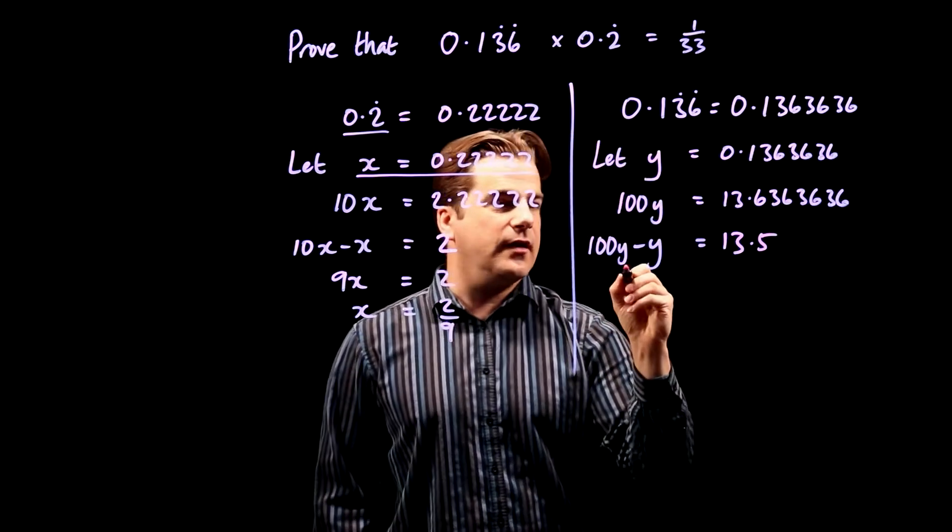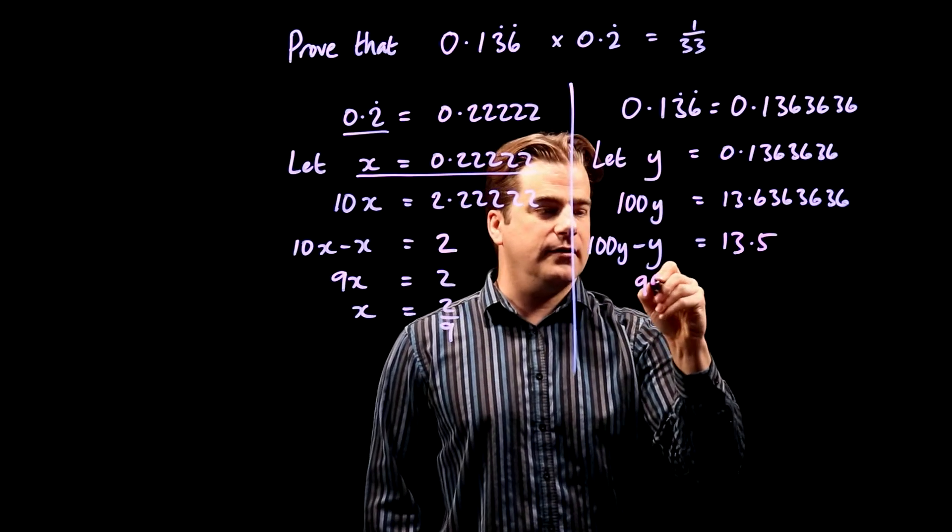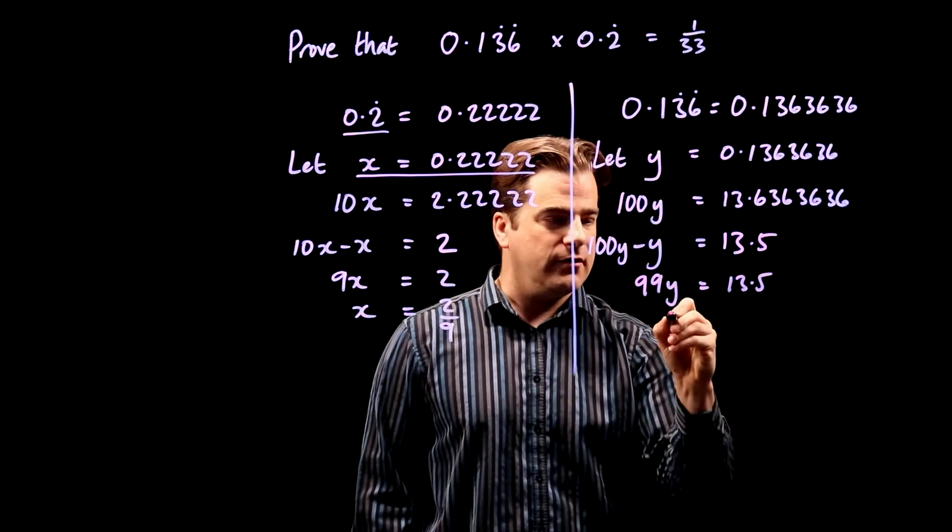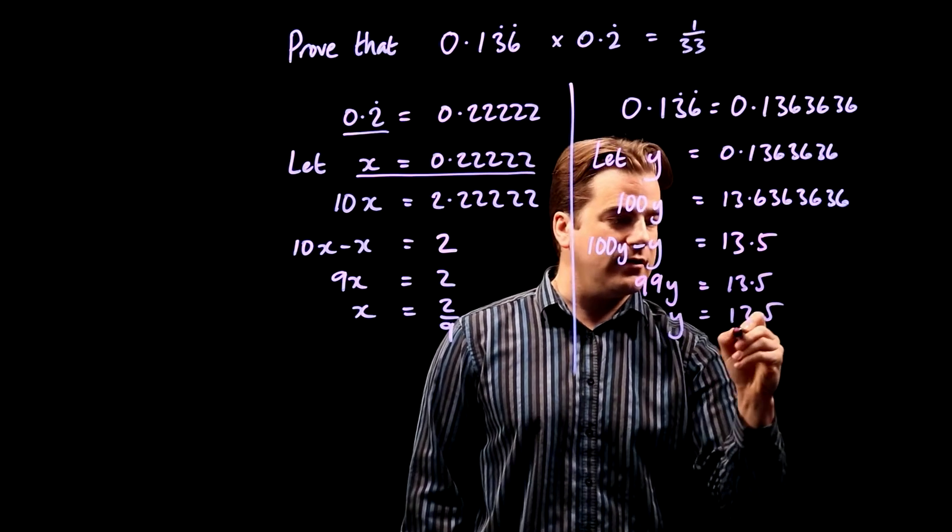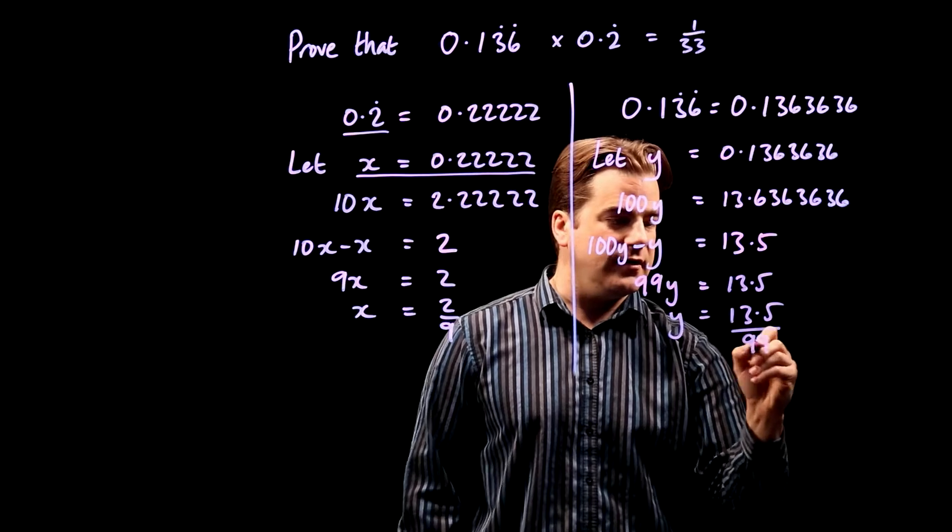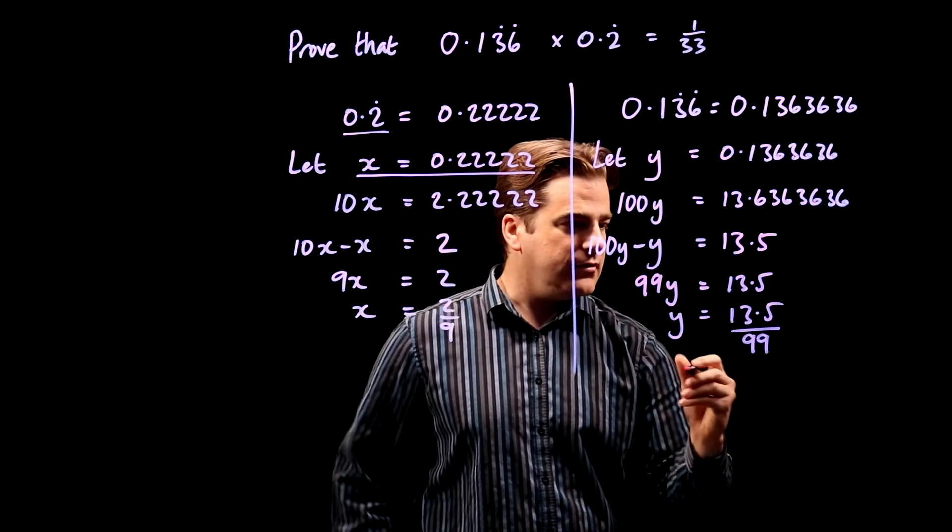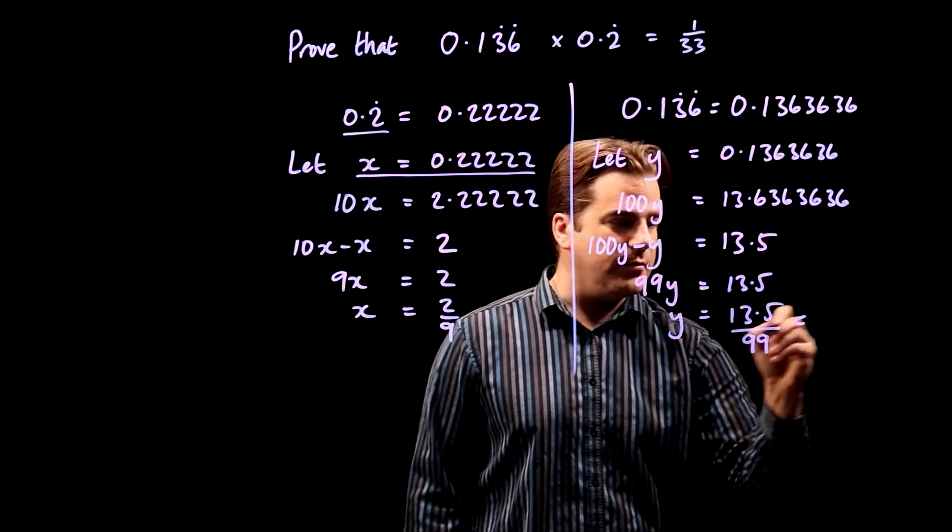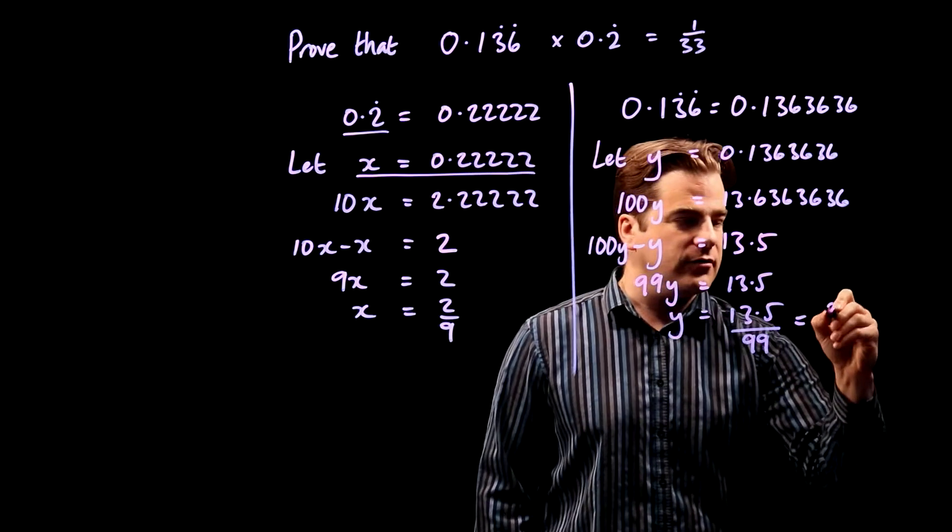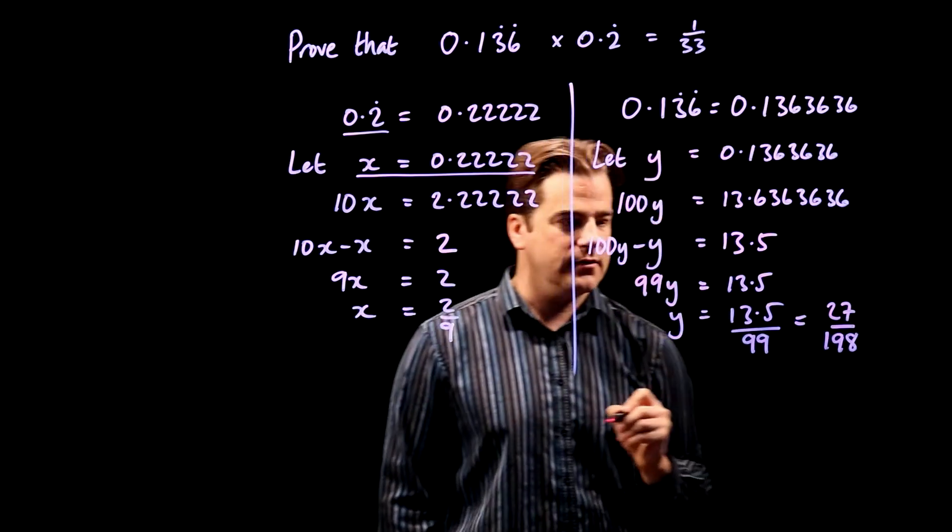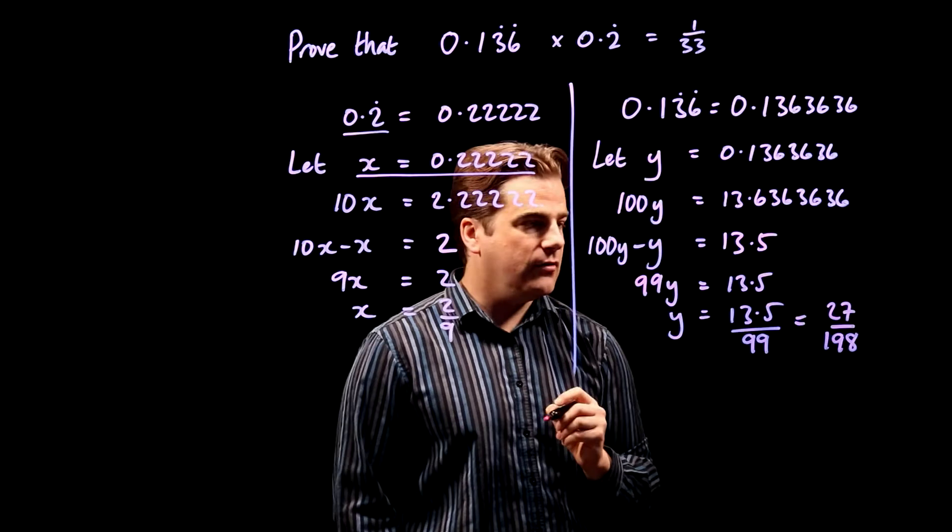So we get 99y equals 13.5. So y equals 13.5 over 99. I don't like that decimal. So let's multiply top and bottom by 2. So we get 27 over 198. Good.